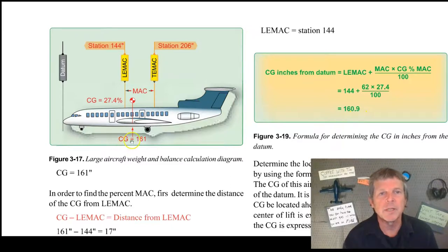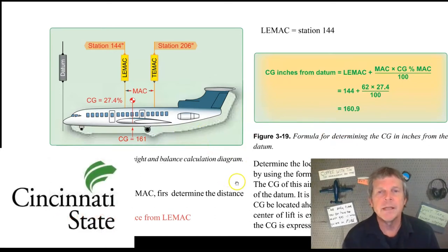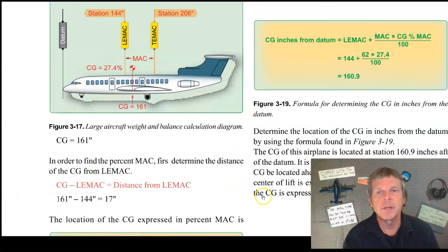And if we look back at our picture, our CG, they said 161. So they took 160.9, they rounded it. Okay, so that is the way that we get the other direction using these calculations of mean aerodynamic chords.